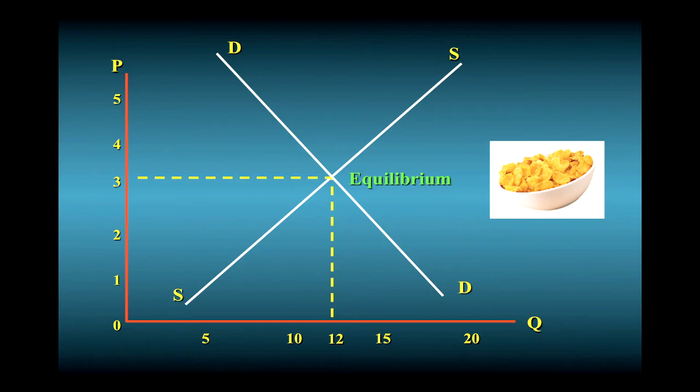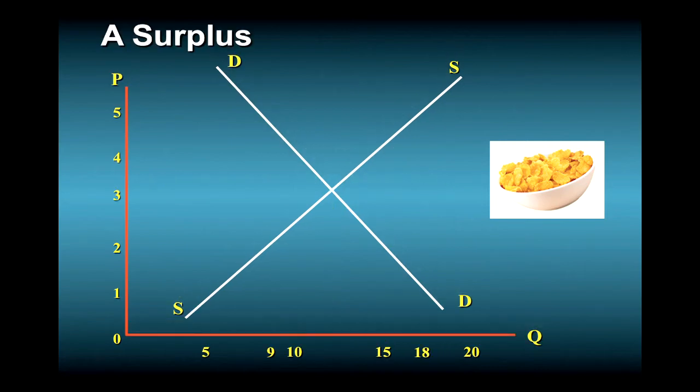Let me prove that to you with a couple of experiments. Let's first suppose that the price is 5 instead of 3. In this case, firms are willing to supply 18 million boxes of Corn Flakes, but consumers demand only 9 million at that price. At this price, we have a surplus in the market, an excess of quantities supplied over quantity demanded.